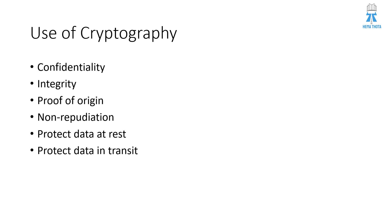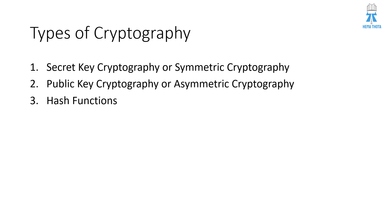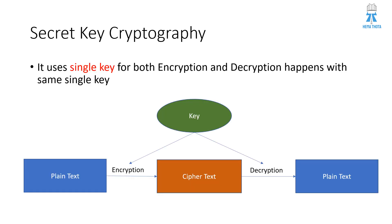The uses of cryptography include ensuring data integrity, proof of origin, non-repudiation, and protecting data in transit. The types of cryptography are: secret key cryptography (symmetric cryptography), public key cryptography (asymmetric cryptography), and hash functions.